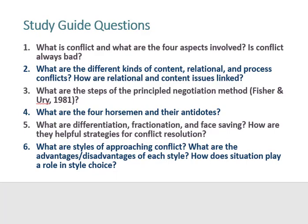For this chapter, I want you to know what conflict is and the aspects involved. Think about the process of conflict — those steps are important. You'll want to know the steps of the principled negotiation method and understand the one we're using called the four horsemen and their antidotes. Understand the strategies of conflict resolution, approaching conflict, advantages and disadvantages, and how a situation impacts the style choice.